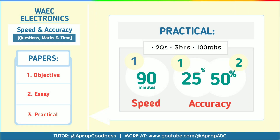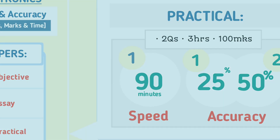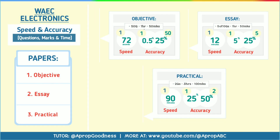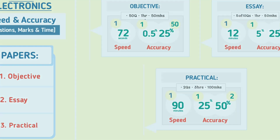For the practical, you have two questions to be answered in three hours for 300 marks. Because of this, your speed should be one and a half hours per one question. If you are accurate per question, you get 25 percent for one, so that will be 50 percent total — which means the practical is very, very important to pass this examination.